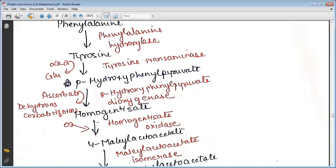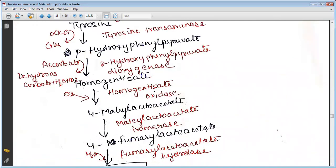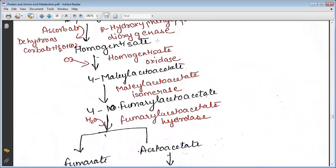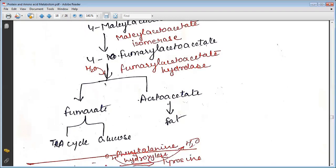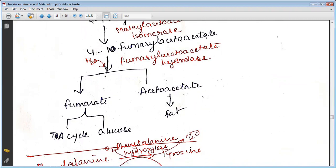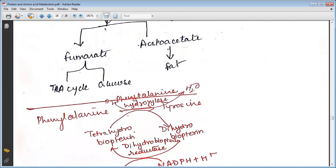Then maleylacetoacetate changes to fumarylacetoacetate in the presence of maleylacetoacetate isomerase. Fumarylacetoacetate changes to fumarate and acetoacetate in the presence of fumarylacetoacetate hydrolase. The fumarate either goes into the TCA cycle or forms glucose, or the acetoacetate changes into fat.